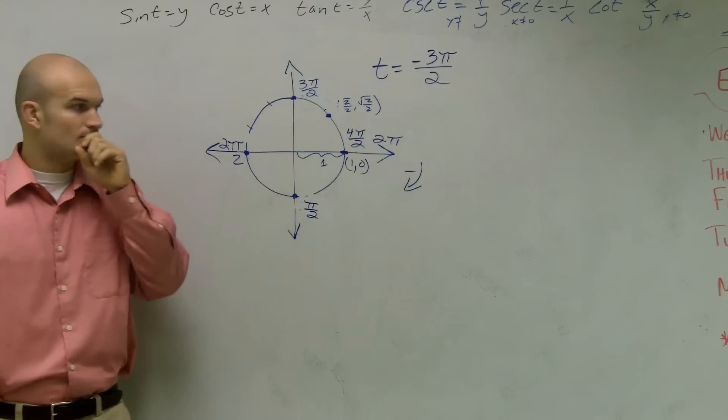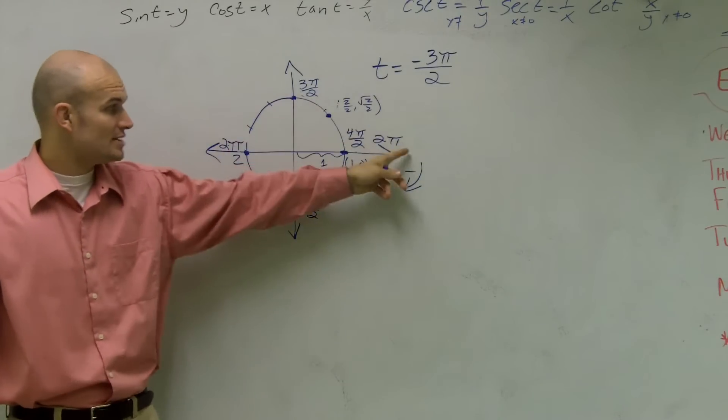So does everybody see how I just labeled the circle to help us use this point? So we go in the negative direction. So you're going to go down this way.